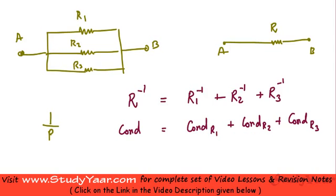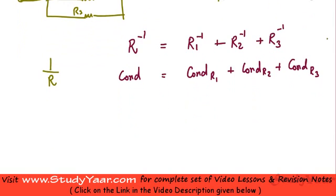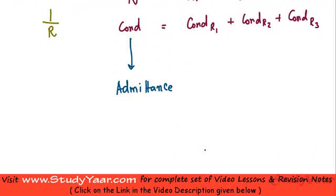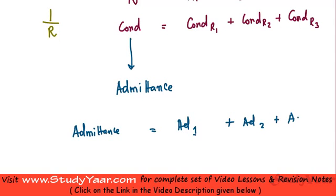Conductance is 1 divided by R. Similar to this concept of conductance, in an AC circuit you have the concept of admittance. So basically, in any AC circuit, if you have a set of parallel impedances, your net admittance is simply the admittance due to impedance 1 plus admittance due to impedance 2 plus admittance due to impedance 3.